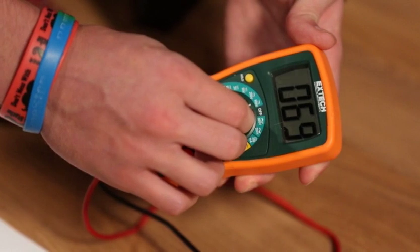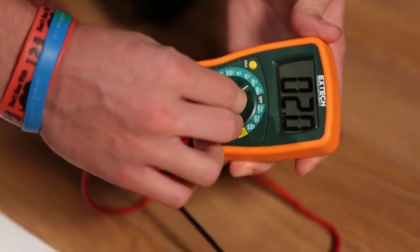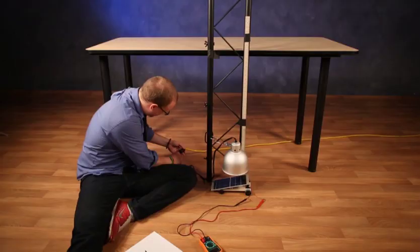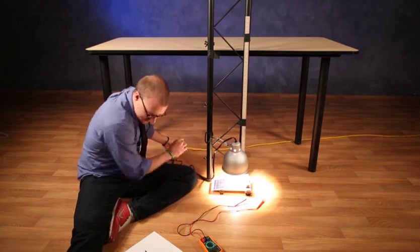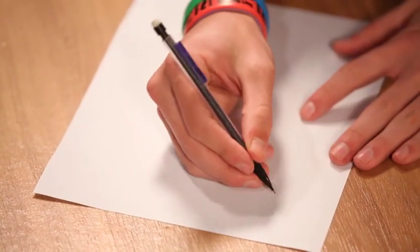Turn the multimeter to the appropriate DC voltage range. Turn on the light. Now record the voltage and the distance.